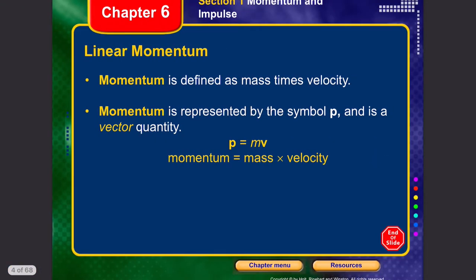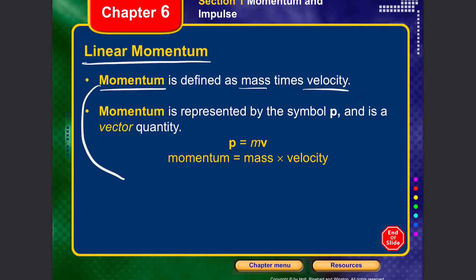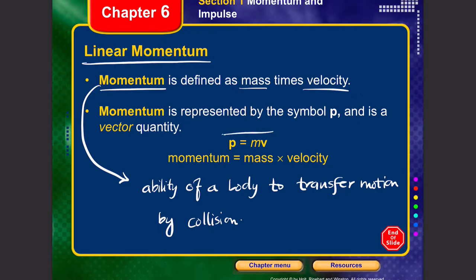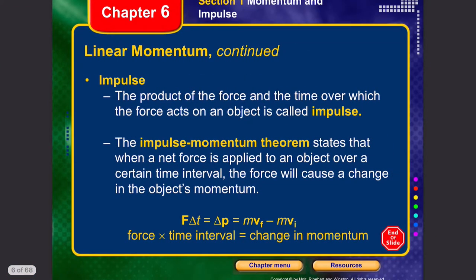Let's start with momentum. What is linear momentum? In simple terms, momentum is defined as the product of mass and velocity. Originally, momentum is the ability of a body to transfer motion by collision. It is a vector quantity because velocity is a vector — multiplying a scalar by a vector gives a vector result.